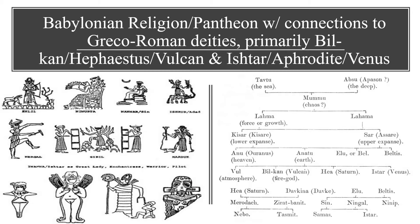Now we can talk about the Babylonian religion and their pantheon of deities. Like the Egyptians and so many other ancient civilizations, the Babylonians were polytheistic, meaning they worshipped many gods. They worshipped a god of the sky, gods of the sun, gods of the land, and they also had gods for fire as well.